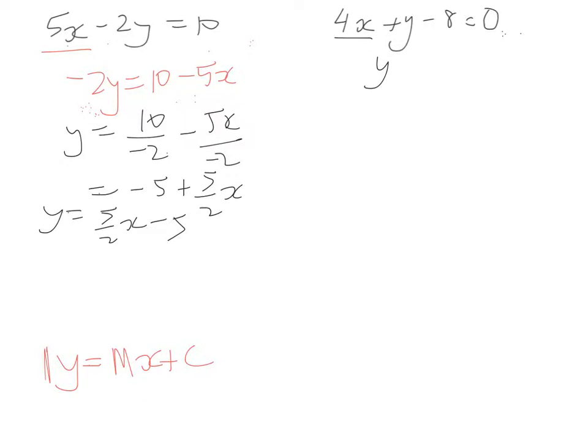So y equals negative... Sorry. Undo. So y minus 8 equals negative 4x. And then we're going to add 8 to both sides because it's negative 8 here. So we're going to have y equals negative 4x plus 8. And that's it.